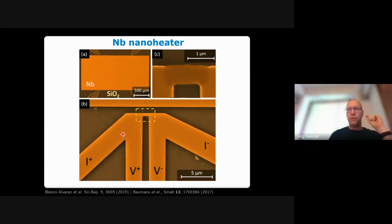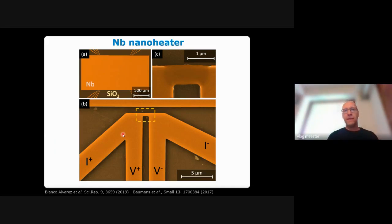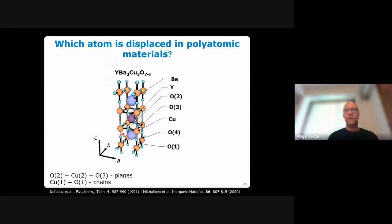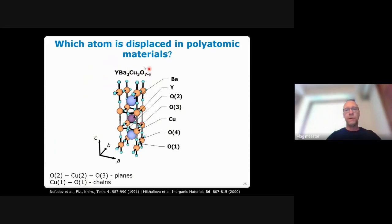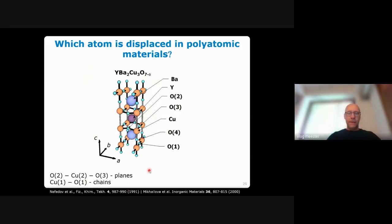What happens when you try to electromigrate a material with a very complex unit cell containing many atoms? This brought us to study electromigration in YBCO — a high-Tc superconductor with a critical temperature of about 90 K. YBCO has a complex unit cell with oxygen atoms, copper atoms, yttrium, and barium — a lot happening. We're not the first to ask this question; some Russian scientists posed it 30 years ago, but without any visualization.